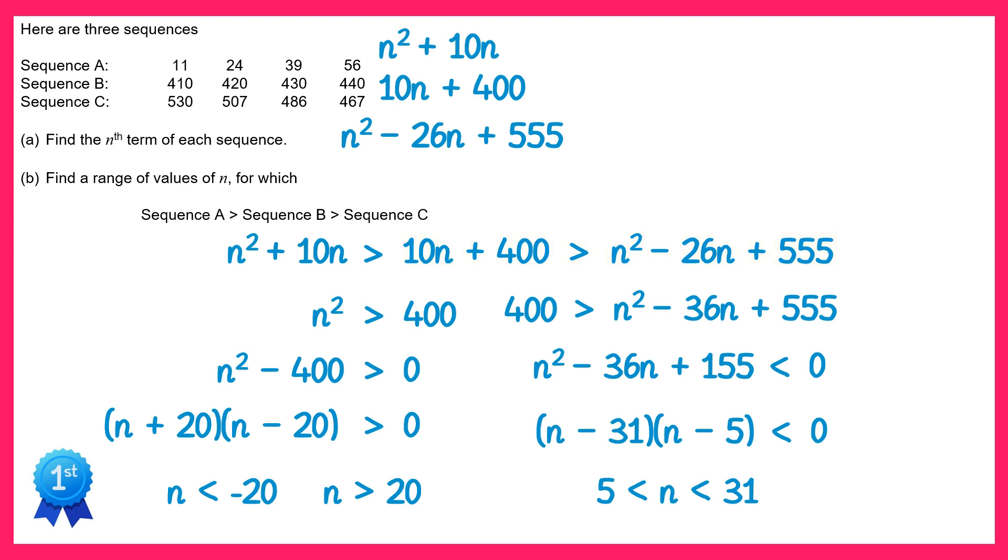Now we were asked to find a range of values of n for which this was true. Now when we work with sequences, we don't ever have negative terms. In fact, the first term is when n equals 1, so we can lose the first part of the first solution, n is less than negative 20, since we're not interested in terms where n is negative. Now if we look at what we have left, we have n is greater than 20, and then n is in between 5 and 31. The only way for both of these statements to be true is if n is in between 20 and 31. And that's your solution to this question.